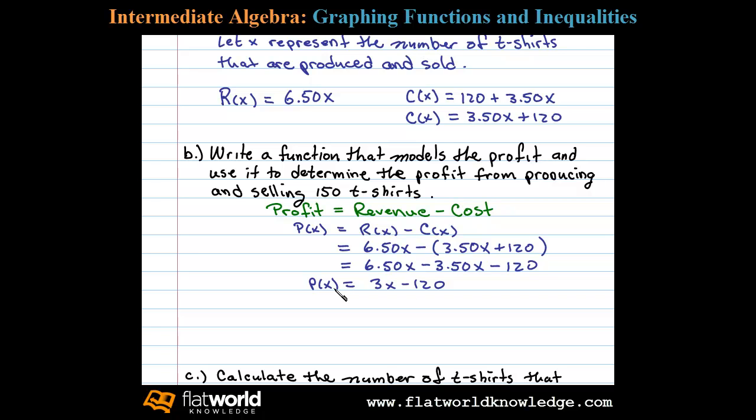Now we're going to use this to determine the profit of producing and selling 150 t-shirts. So we substitute 3 times 150 minus 120. In this case, we get 450 minus 120, which equals $330. That's our profit from producing and selling 150 units.